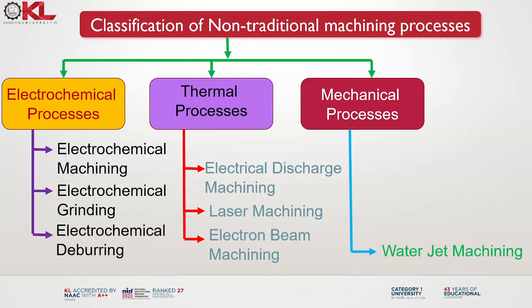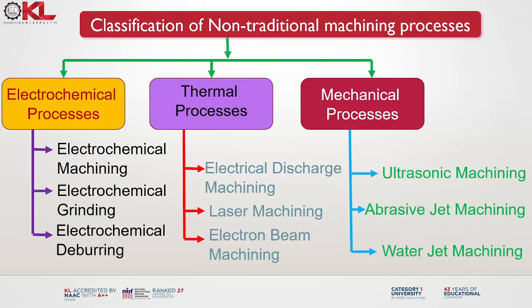Under mechanical processes, sub-classifications include water jet machining, abrasive jet machining and ultrasonic machining. These are the classifications under electrochemical processes, thermal processes and mechanical processes.